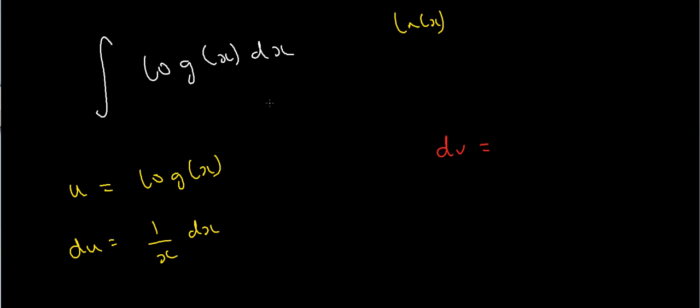And what about dv? Well I chose u to be log x, and dv is just whatever's left over. And in this case, whatever's left over just happens to be dx.